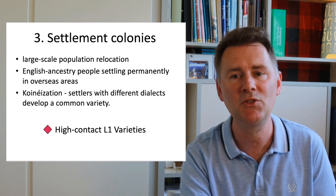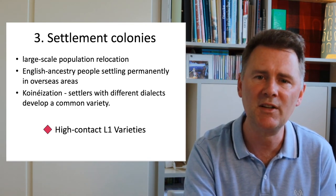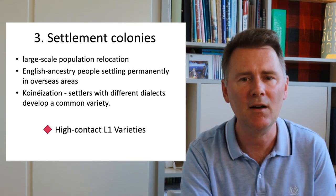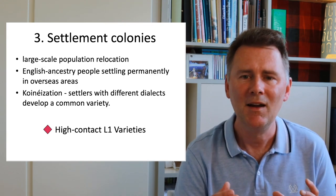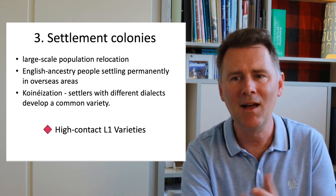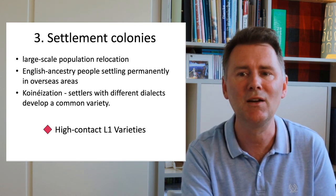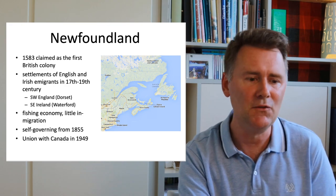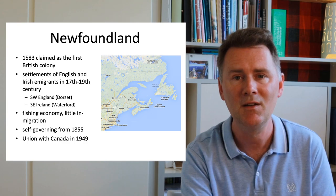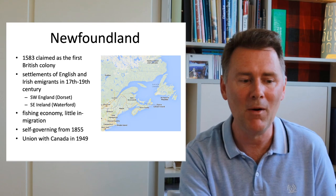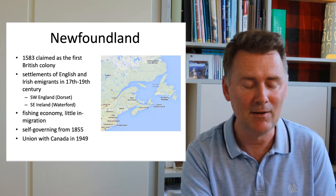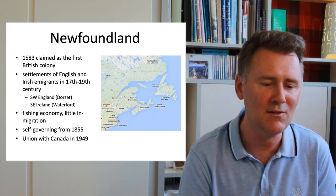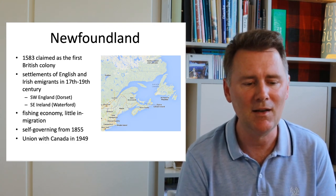Settlement colonies have a very different linguistic outcome. They involve large-scale population relocations in which English-ancestry people settle permanently in overseas areas — the dialects of these speakers mix and blend into a new high-contact L1 variety. Examples include St. Helena English, Australian English, New Zealand English, and Newfoundland English. Newfoundland was claimed as the first British colony in 1583, and we know quite a bit about the settlers from England and Ireland. Newfoundland was self-governing from 1855 onward and formed a union with Canada in 1949.